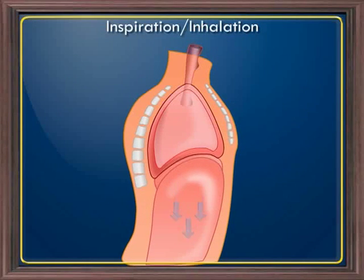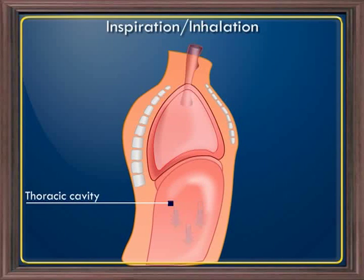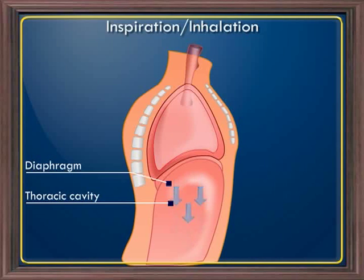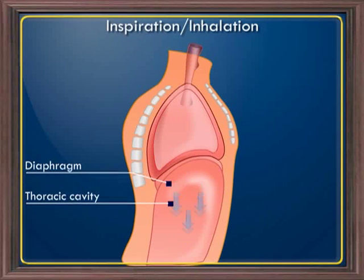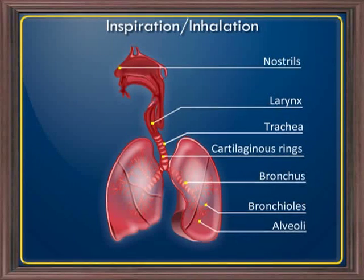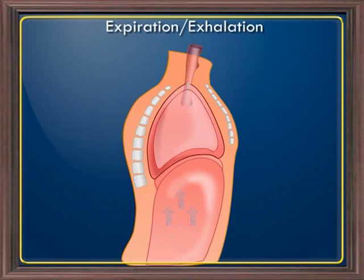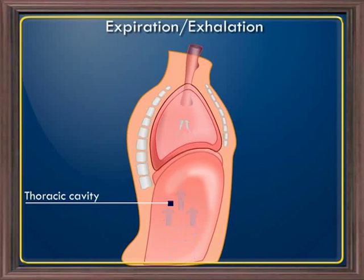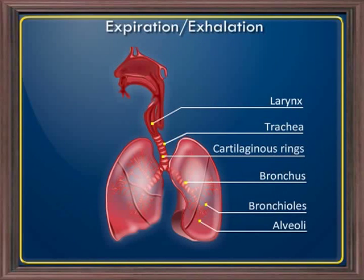During inhalation, the muscles of the thoracic cavity contract. Due to this contraction, the thoracic cavity expands and the diaphragm is lowered. This results in reduced air pressure in the lungs compared to the external air pressure. Air rushes into the lungs through the nostrils, trachea, bronchi, bronchioles, and finally to the alveoli. The muscles of the thoracic cavity then return to their natural position and the diaphragm also returns to its natural position. The air pressure in the lungs increases above outside pressure, and air rushes out through the bronchi, trachea, and nostrils. Both inhalation and exhalation are involuntary events.